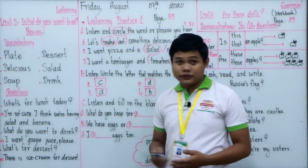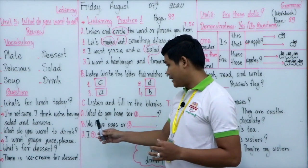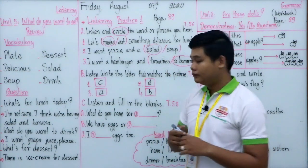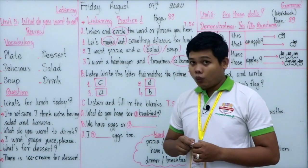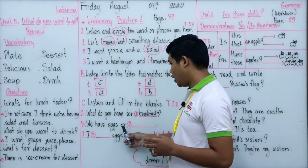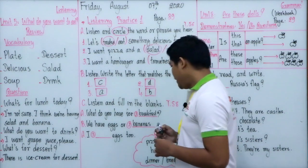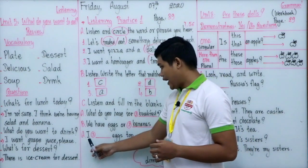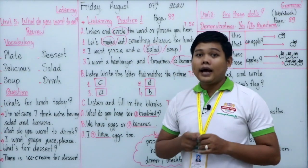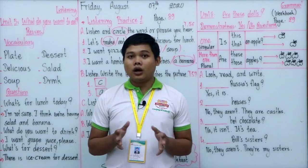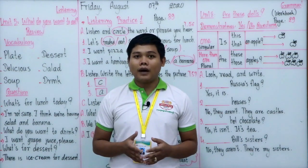Welcome back — did you get all the correct answers? Let's complete the three blanks together. Number one: 'What do you have for breakfast?' Number two: 'We have eggs or bananas.' Number three: 'I have eggs too.' Now we have completed our first section video. I hope you liked it. If you have any questions, please drop them in the group and the teacher will respond. Thank you for watching — goodbye, good luck, see you in the second session!